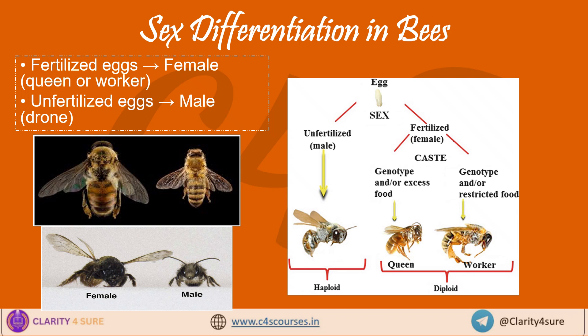Now let's see how these castes are differentiated based on their sexes. How bees become a queen, worker, or drone depends upon the fertilization of the particular egg. When the egg is fertilized, it becomes a female — either a queen or a worker bee depending on what it is fed. When the fertilized female is fed with excess of food, it gives rise to the queen bee. When the food is restricted, it gives rise to a worker female. These are diploid eggs. If the egg is unfertilized, it becomes a drone — a male bee. Simple yet amazing biology.